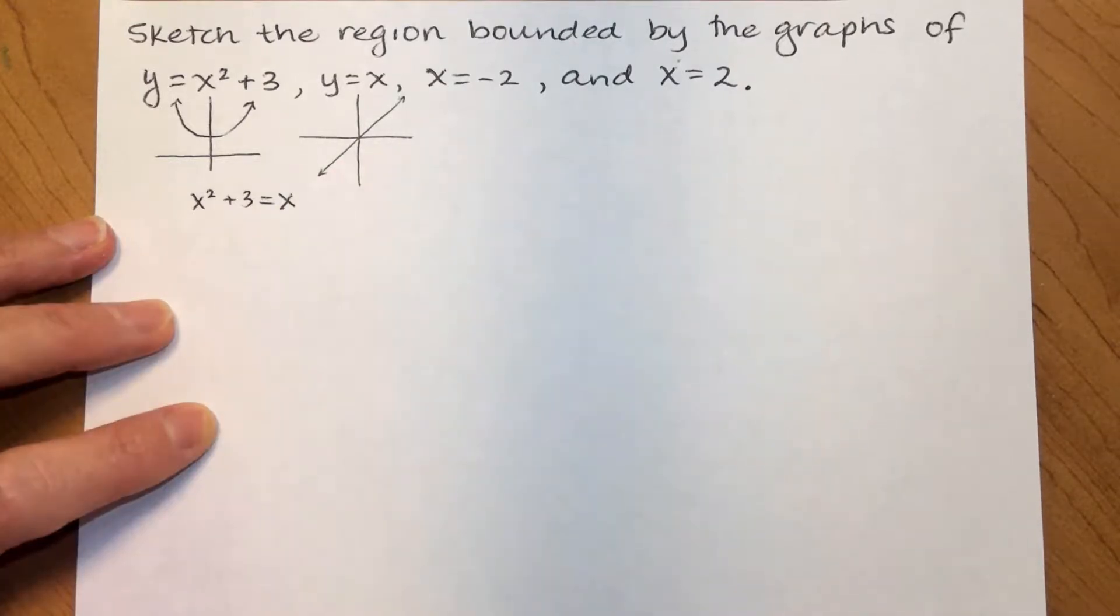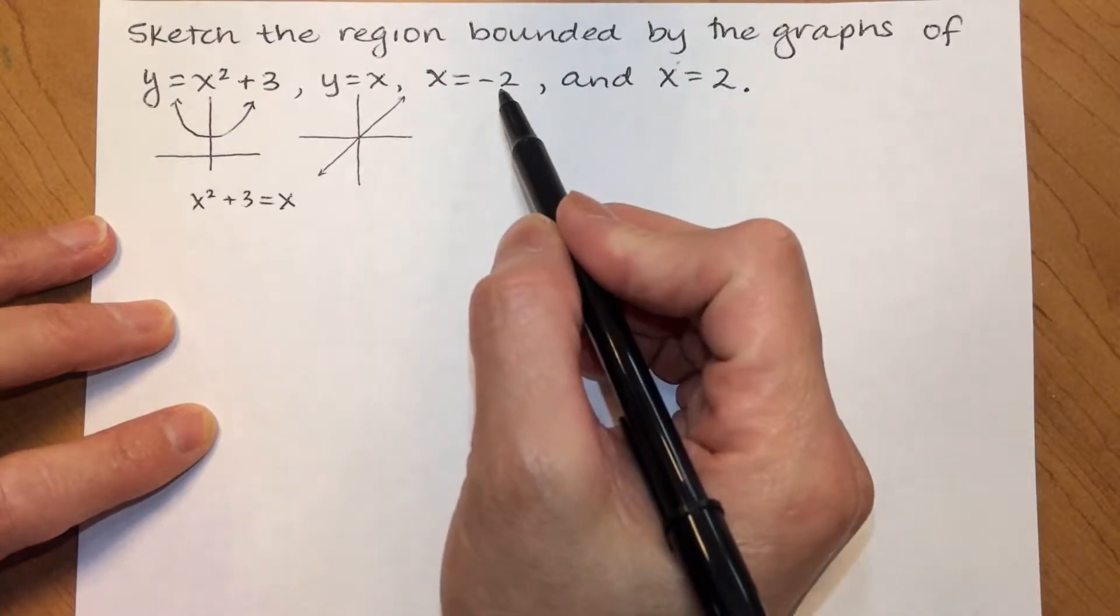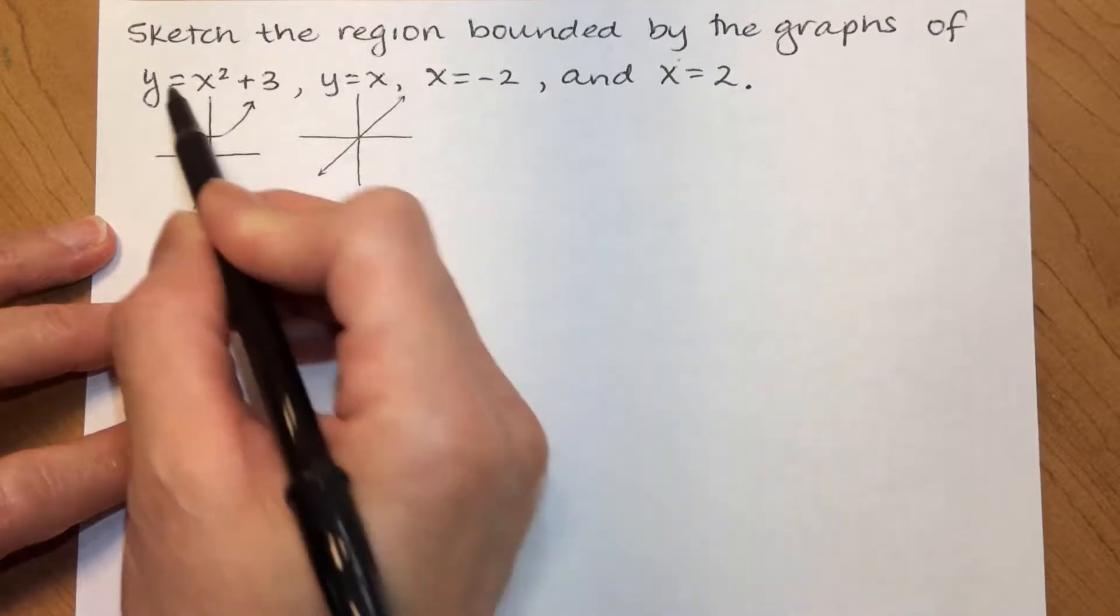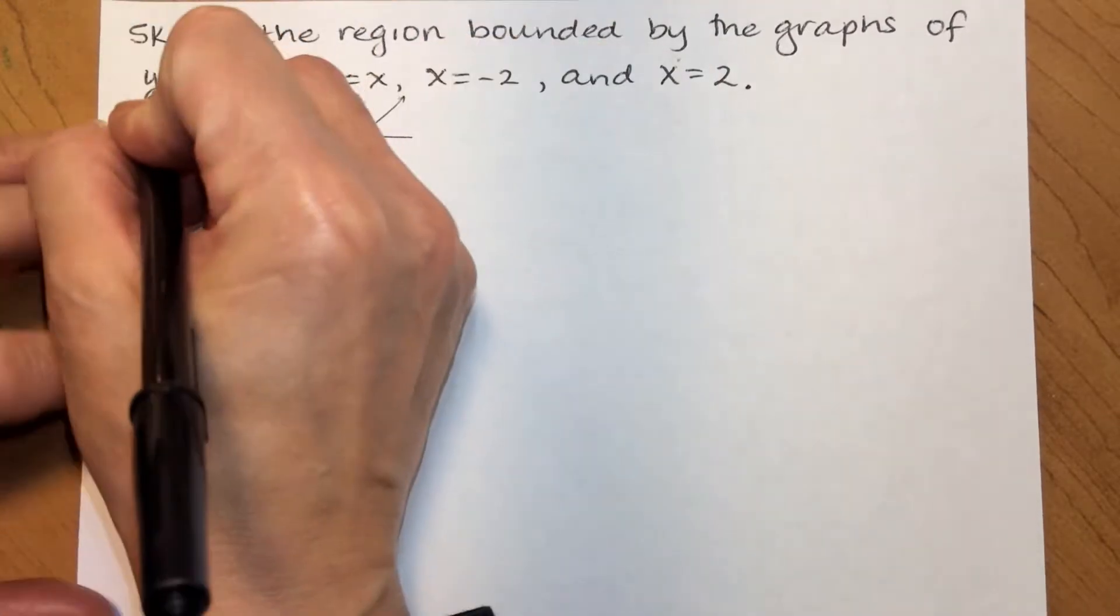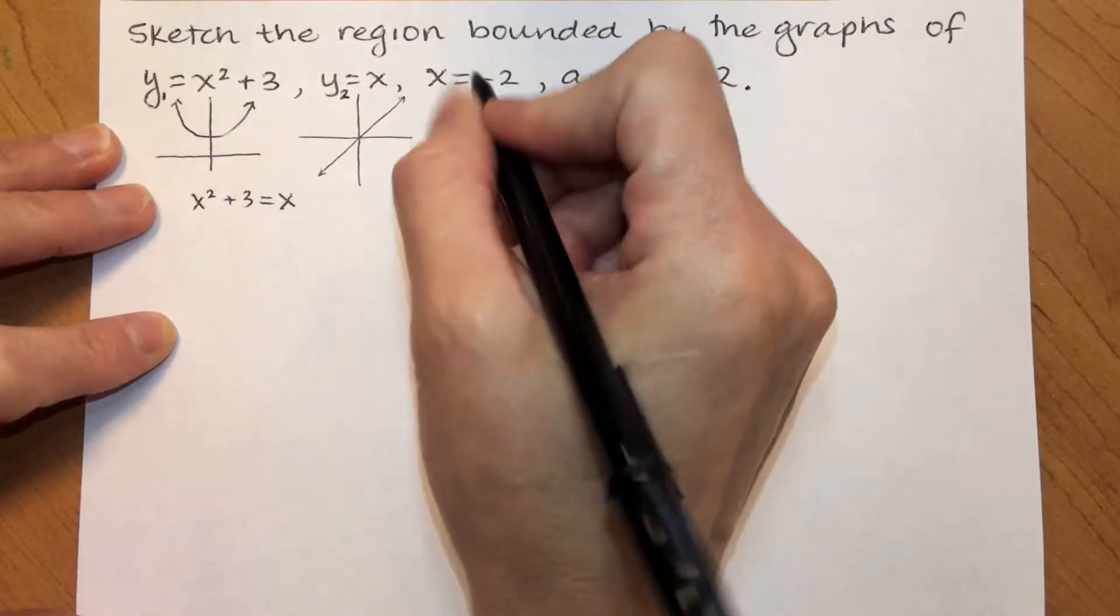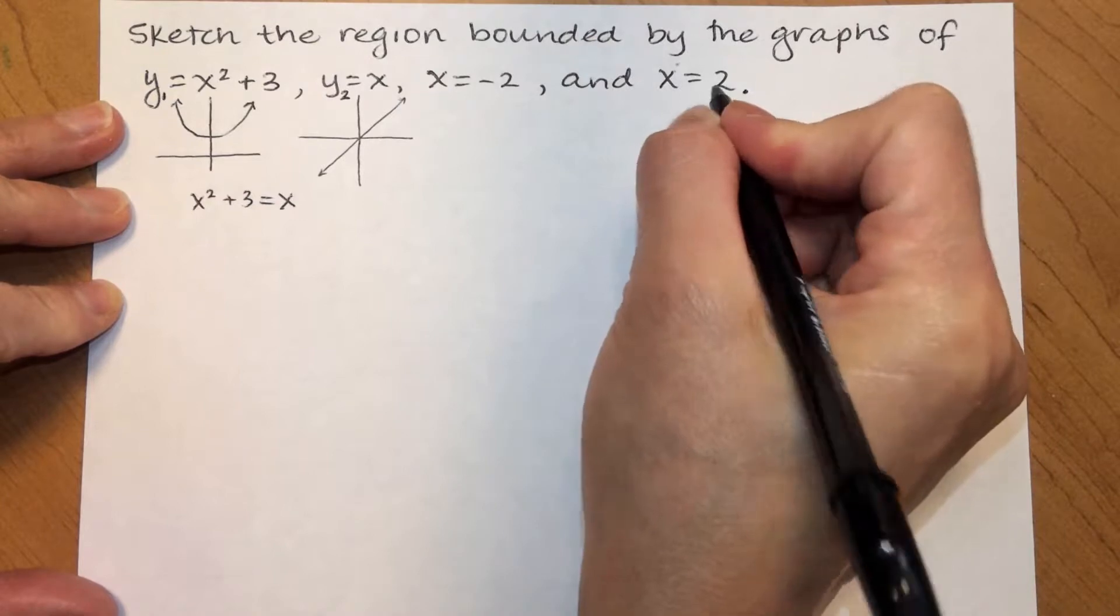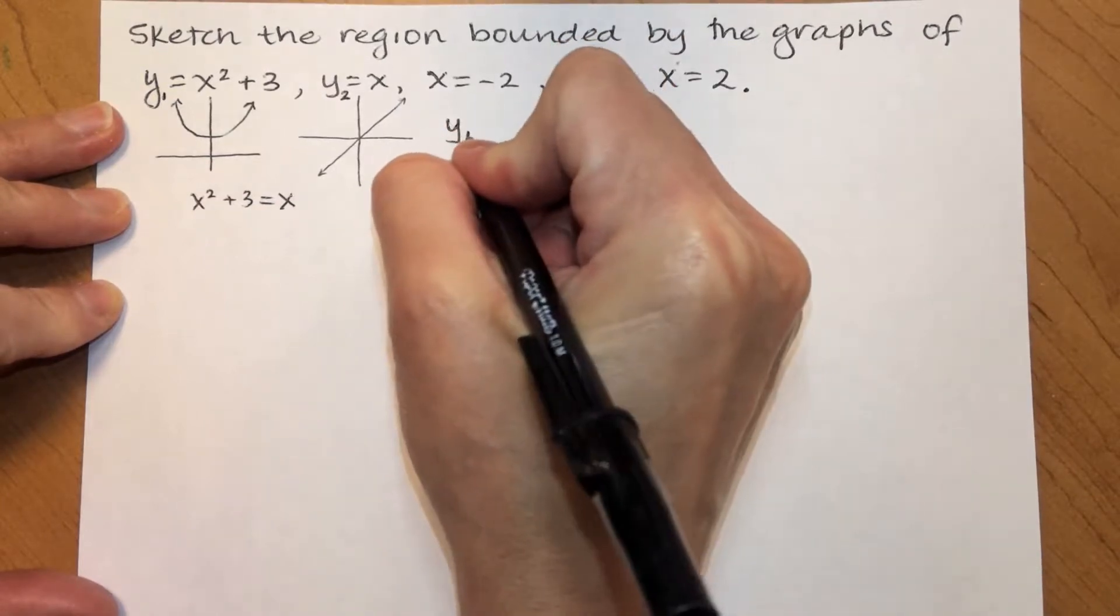Which tells me that x equals 2 and x equals negative 2 are going to be my boundaries. So, when x equals negative 2, let's call this y1 and let's call this y2. When x equals negative 2 or 2, y1, my parabola, is,